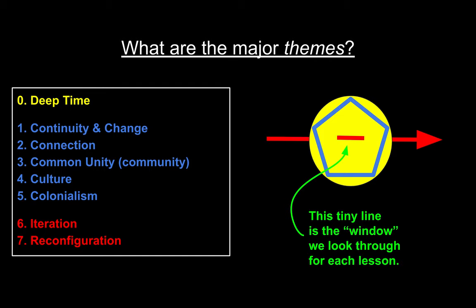There are eight concepts we're going to really learn about this year. Don't worry, there's no quiz on this yet. But these eight concepts will be driving every lesson we do. We'll be looking at the deepest of time, understanding how far back our civilization goes, and the matter, energy, and information that make us. We have to look at deep time, continuity and change, connection, common unity — our community — culture, colonialism, and then two things: iteration, which is a fancy but accurate word for repetition, and reconfiguration, which is another word for transformation.